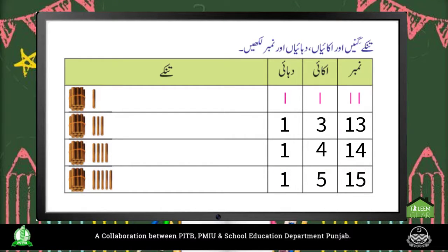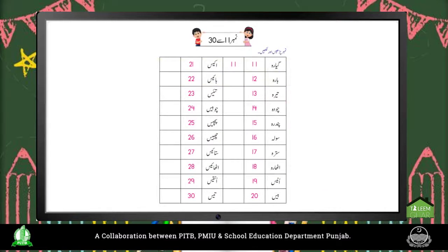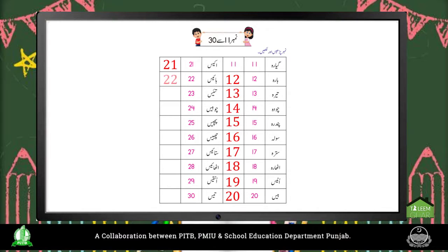Children, in the same way you will practice these in your book. Now we will read counting from number 11 to 30. 11, 12, 13, 14, 15, 16, 17, 18, 19, 20, 21, 22, 23, 24, 25, 26, 27, 28, 29, 30.